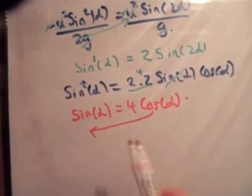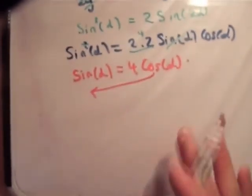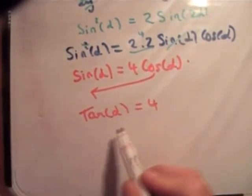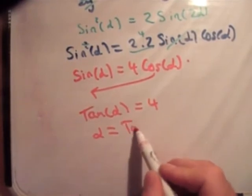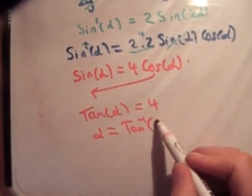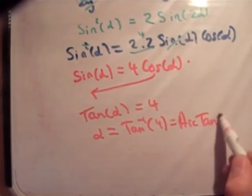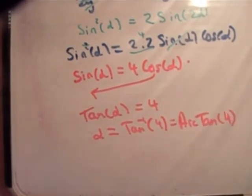Or if you bring down your cos, you're going to get sine over cos, which becomes tan. Is equal to 4, alpha is equal to tan inverse 4, is equal to arc tan. Remember, of course, that arc tan and inverse tan are just two ways of writing the same thing. And put that into your calculator and get alpha.